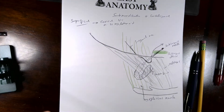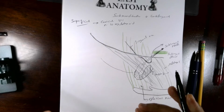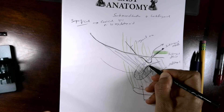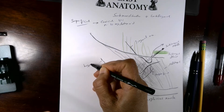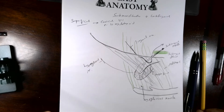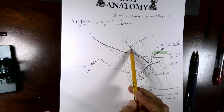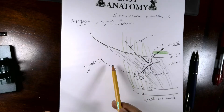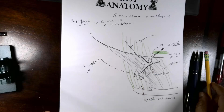The hypoglossal nerve travels between the mylohyoid muscle and the hyoglossus muscle, and it also crosses below the level of the duct. So keep in mind there are several nerves related to the gland: the lingual nerve hooks around the duct, and the hypoglossal nerve travels between mylohyoid and hyoglossus muscle below the duct.